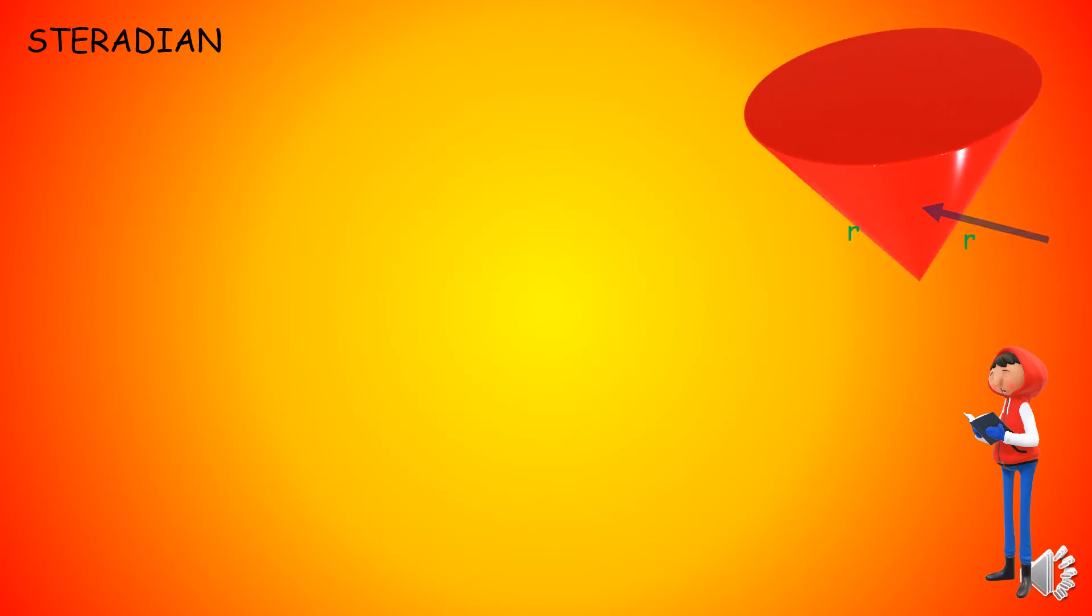Now observe this cone. From the concept of geometry, we know that there must be some angle between these two radii. But the question is, when does this angle become 1 Steradian?